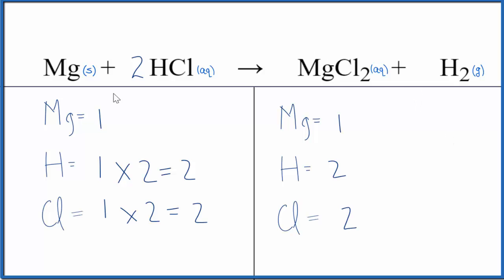This is Dr. B with the balanced equation for magnesium plus hydrochloric acid. The type of reaction is single displacement. This would also be a redox reaction since the magnesium and the hydrogen, they do change their oxidation states. Thanks for watching.